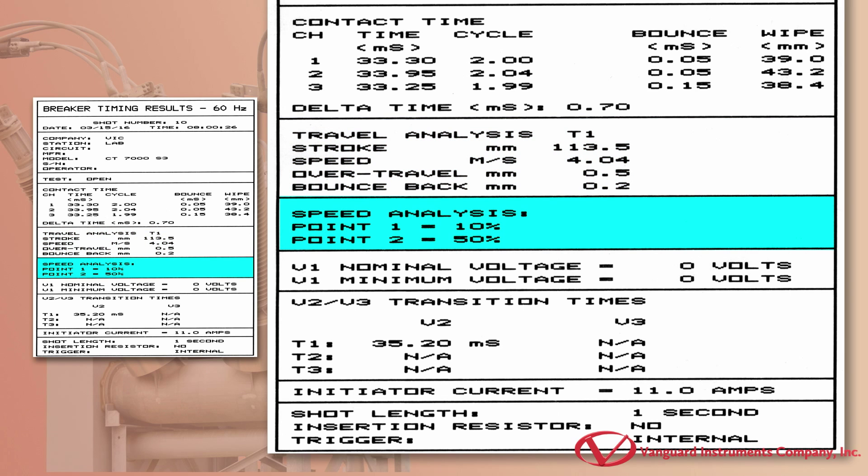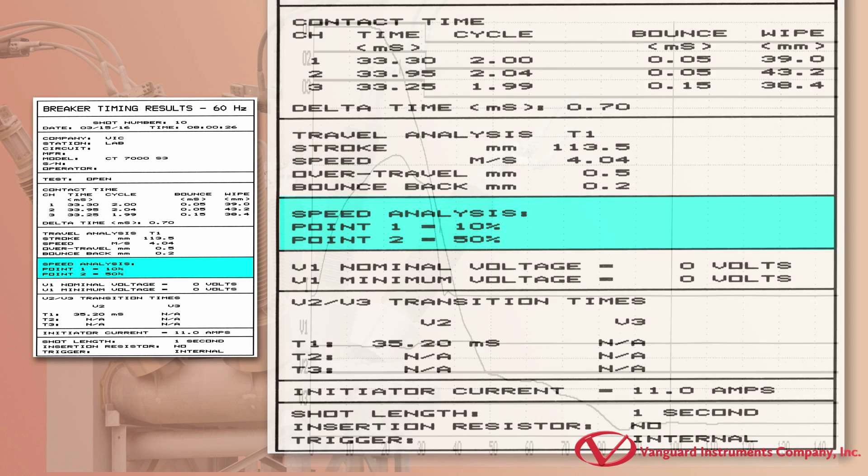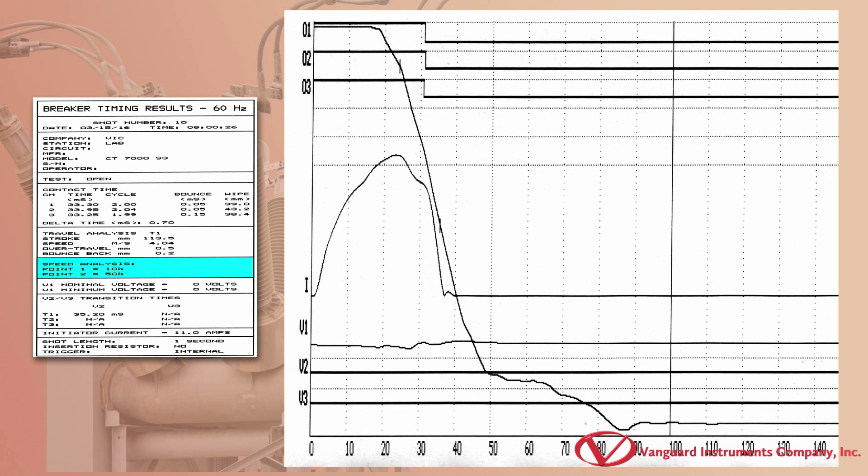In order for the CT7000S3 to calculate the contact velocity through the arc zone, the user must first define the two points on the travel curve. The two analysis points to be used are defined as AP1 and AP2.